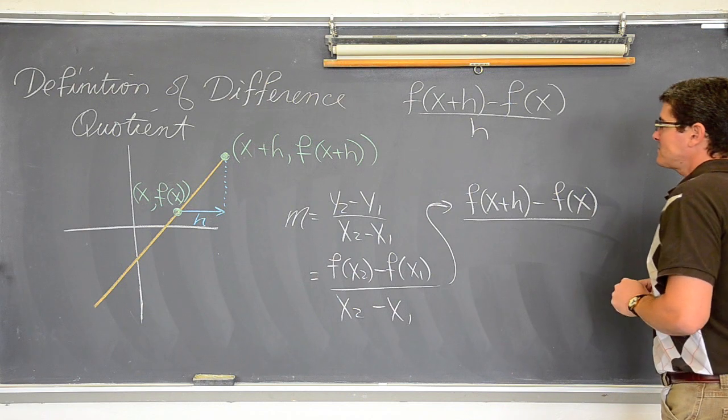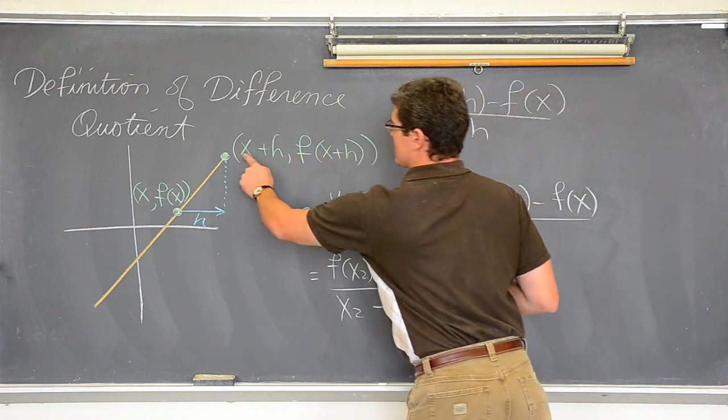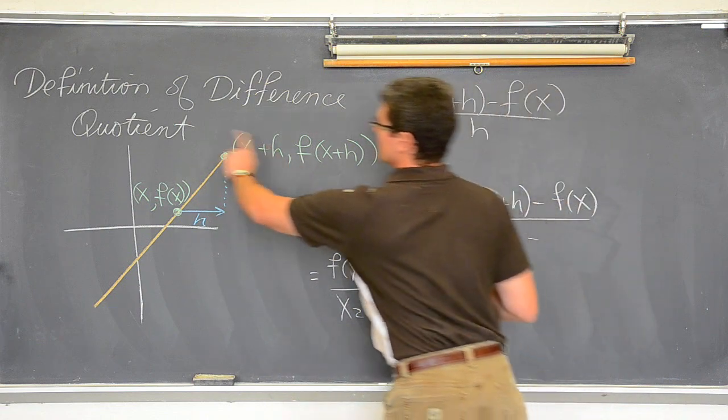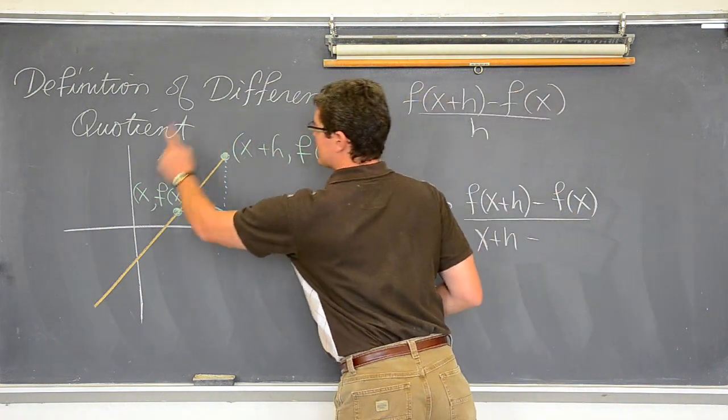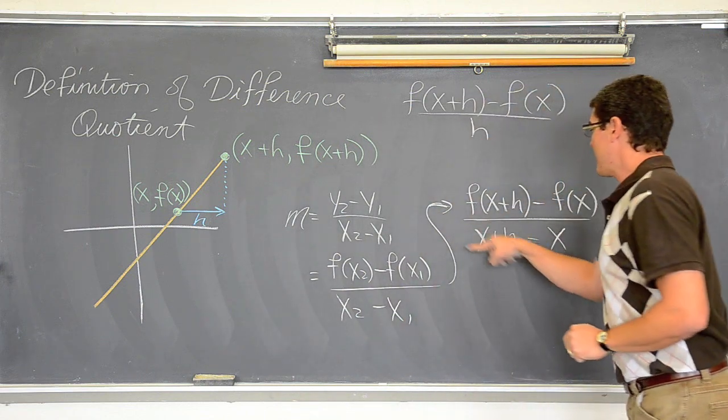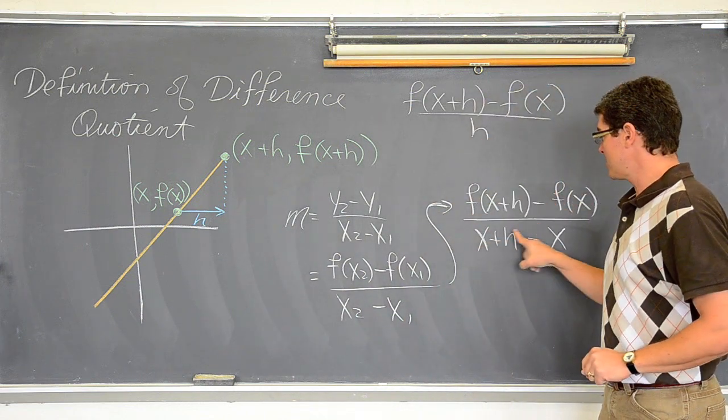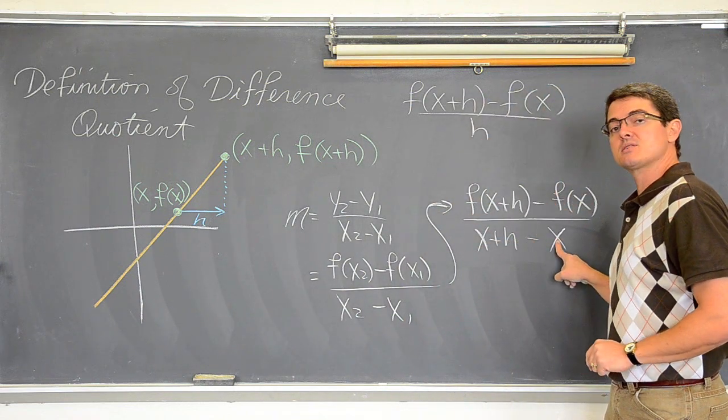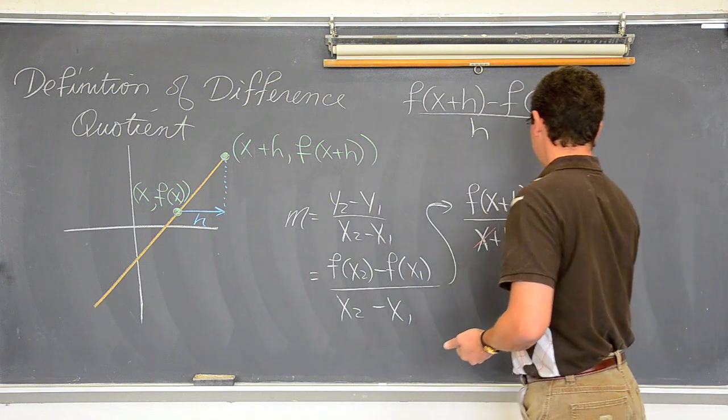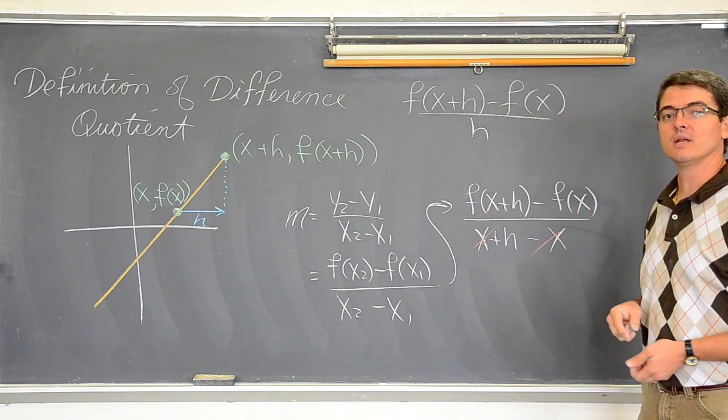Over x sub 2, which is x plus h, minus x sub 1, or x sub 2 minus x sub 1, x plus h, and x. If I clean this up, look, x minus x, those are going to cancel out. Giving me what I started with. So, if your book has defined this definition of a difference quotient, it is not something like whoa, it is going to come back in chapter 11 maybe when you start doing your calculus introduction. It is basically a fancy version of slope.